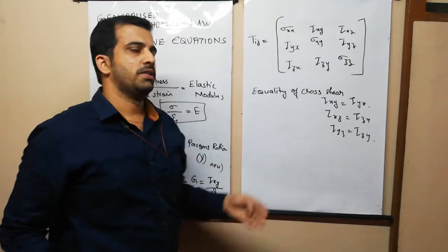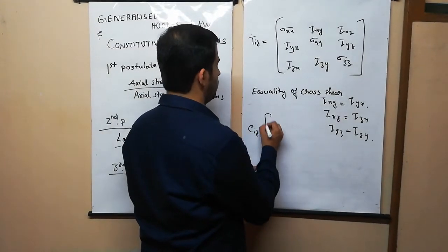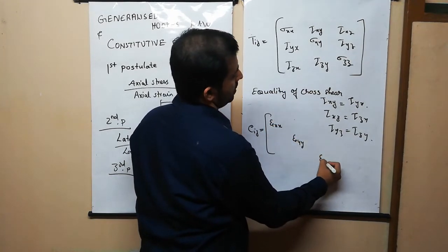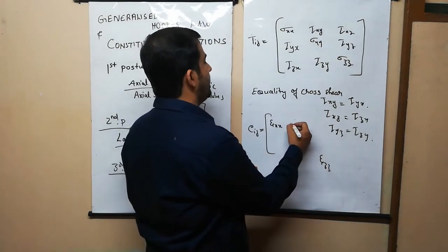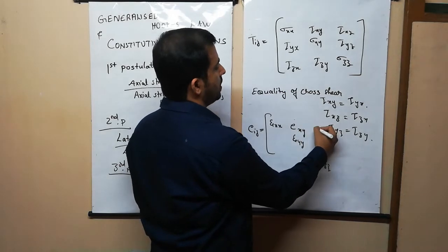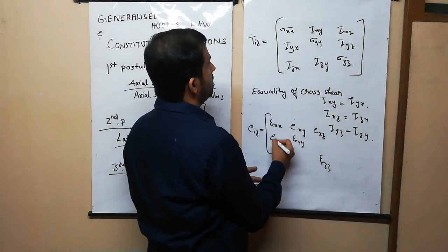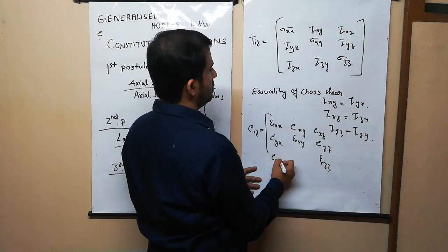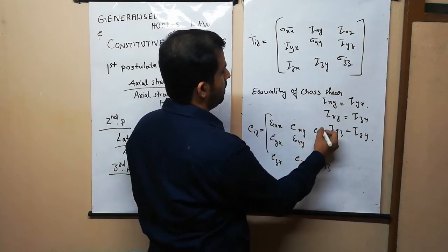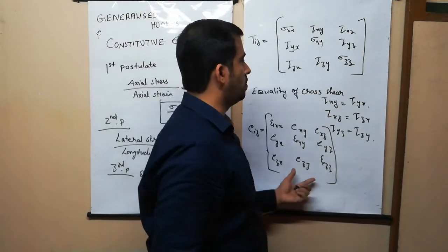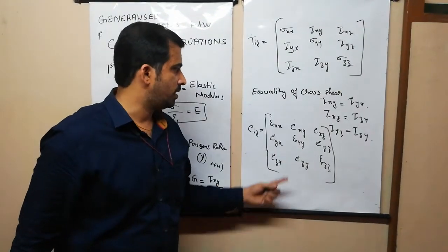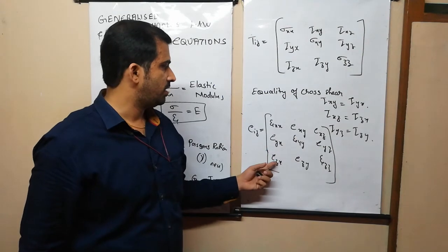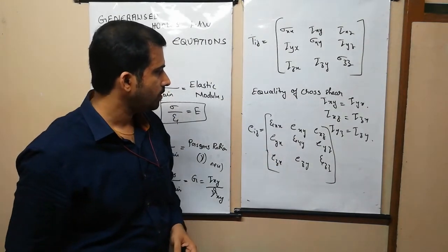Similarly, the strain tensor E_ij contains components epsilon_xx, epsilon_yy, epsilon_zz, e_xy, e_xz, e_yx, e_yz, e_zx, e_zy. In this case also there is an equality: e_xy equals e_yx, e_yz equals e_zy. Note that e_xy equals gamma_xy divided by two, and e_xz equals gamma_xz divided by two — keep this in mind when doing numericals.